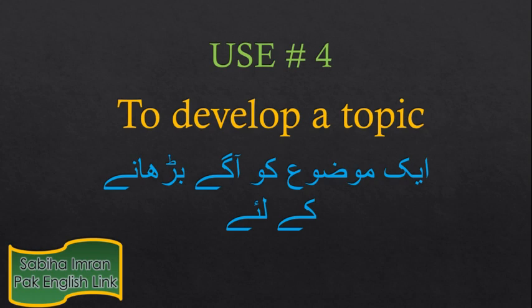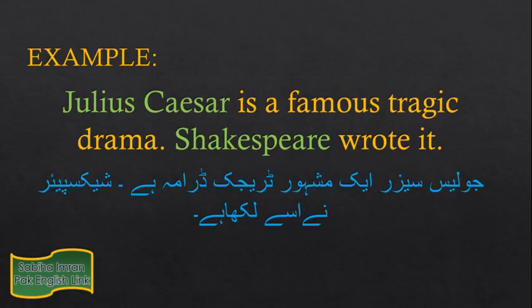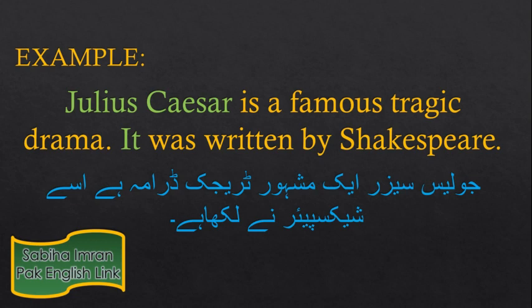अब बढ़ते हैं passive voice के आखरी यानि fourth इस्तेमाल की तरफ — जो किसी topic की development के हवाले से है यानि जब किसी मौज़ू पर मज़ीद बात करनी हो। मिसाल के तौर पर فرض کریں آپ drama Julius Caesar کے بارے میں لکھ رہے ہیں: 'Julius Caesar is a famous tragic drama. Shakespeare wrote it.' یہاں دوسرے sentence کا subject پہلے جملے کے subject سے مختلف ہے، تو balance لانے کے لیے دوسرے جملے کو passive میں کرنا ضروری ہے: 'Julius Caesar is a famous tragic drama. It was written by Shakespeare.'